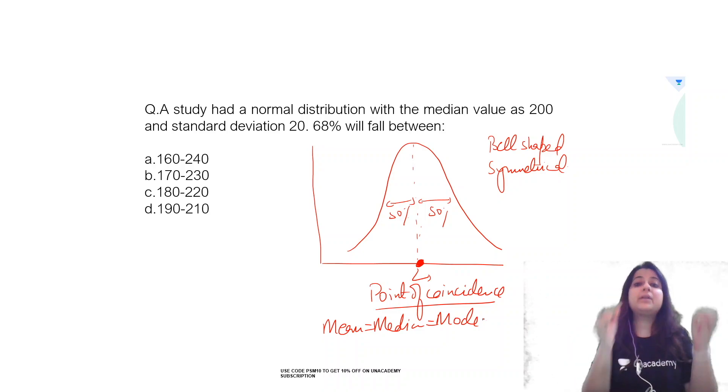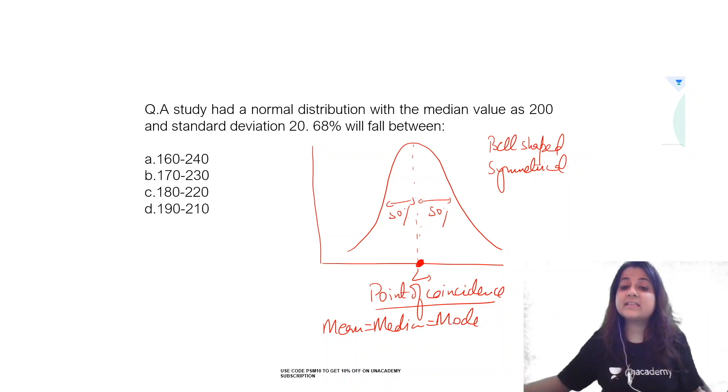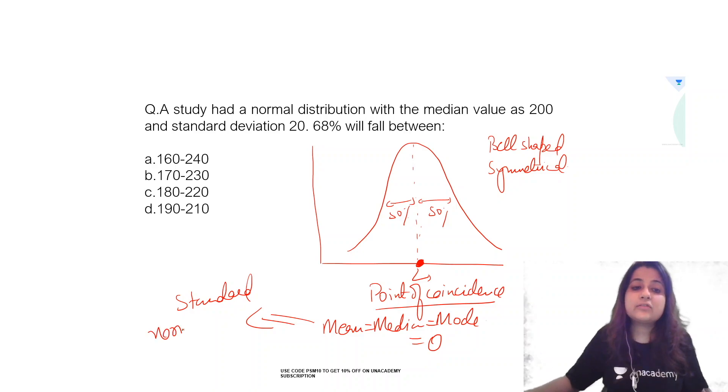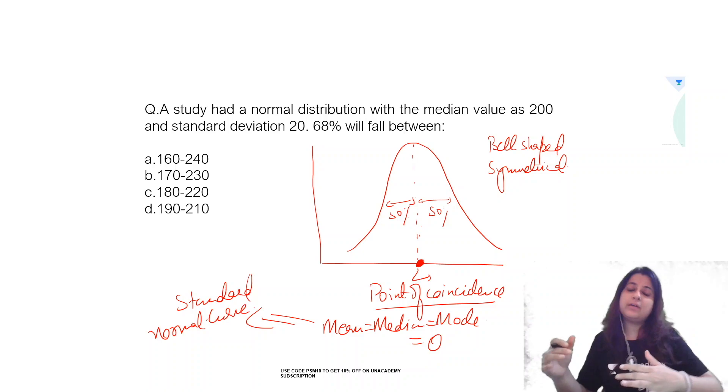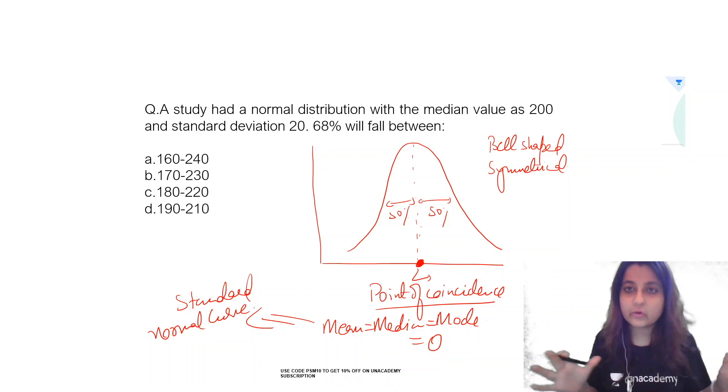Now this could be anything, but when mean is equal to median is equal to mode is say 0, then it is referred to as a standard normal curve. Even this question comes: what is it mean when mean is equal to median is equal to mode is equal to 0? It's called a standard normal curve.